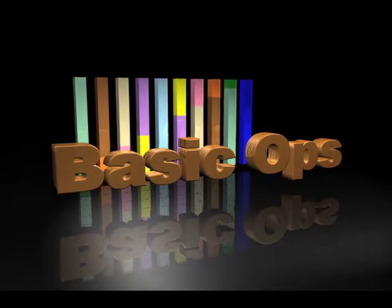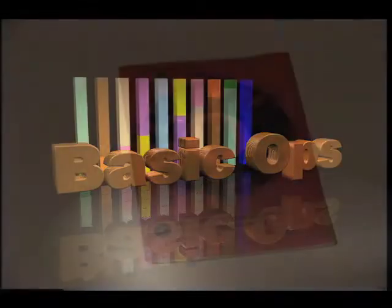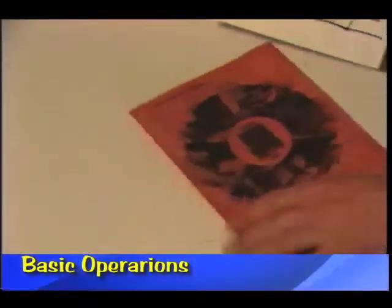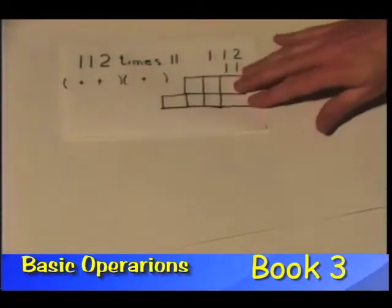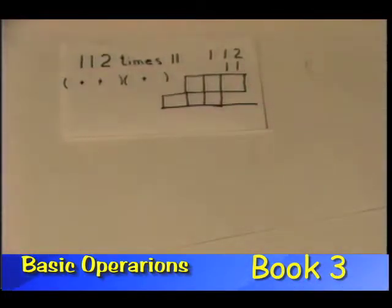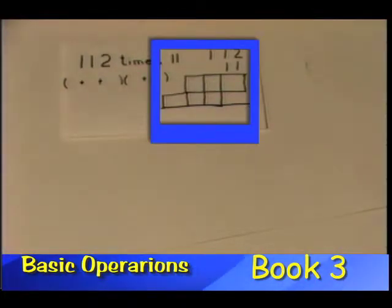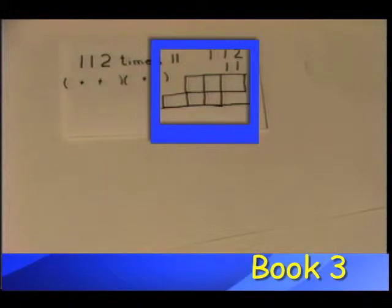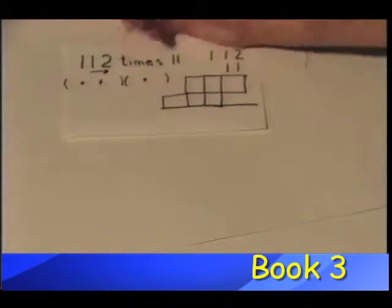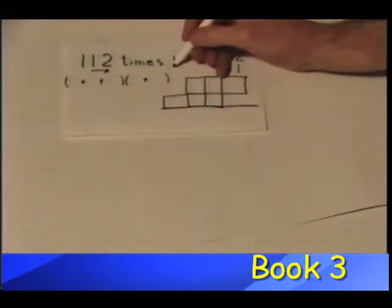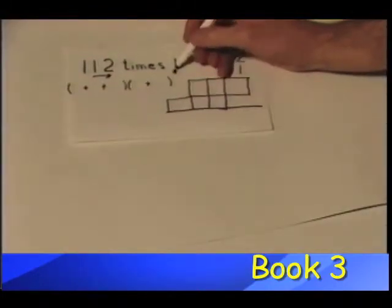Book three. We'll do a problem from book three. We have the first name of our rectangle — the factor's name of our rectangle. We have the distance over: a hundred and twelve, and we have the distance up: eleven.